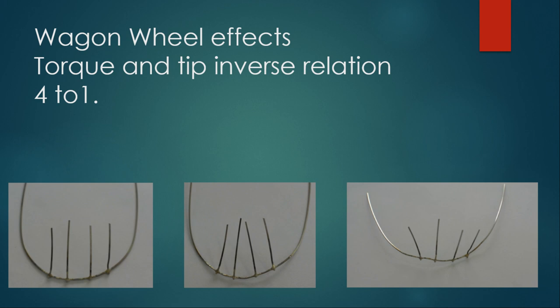When someone gives a positive torque to the upper incisor by four degrees, the roots of the incisor come together by one degree. And when someone gives negative torque to the upper central and lateral incisors, the roots become apart by one degree — and that was called the wagon wheel effect.